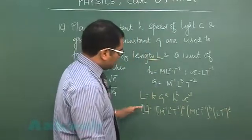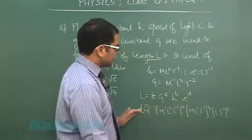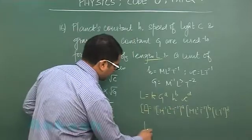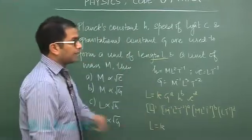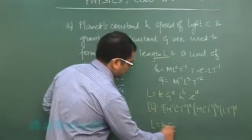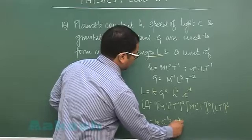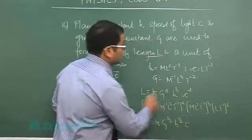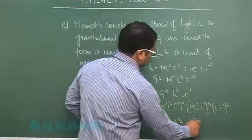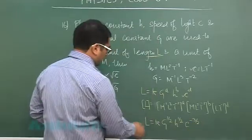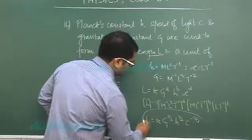Now easily you could calculate the indices and finally you'll get l equals k, where I have calculated the simultaneous equations: g raised to the power half, h raised to the power half, and c raised to the power minus 3 by 2. We'll be referring to this value.